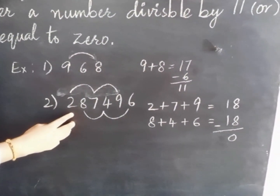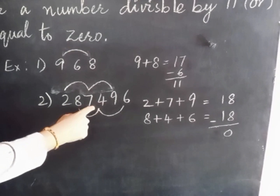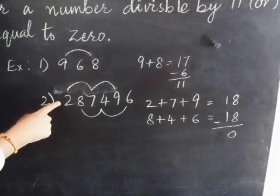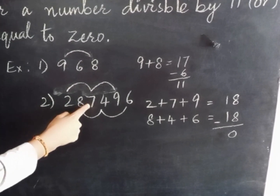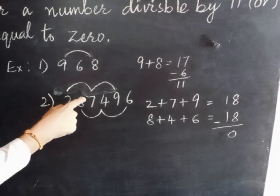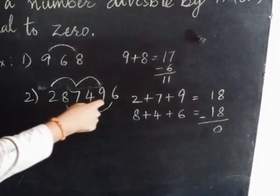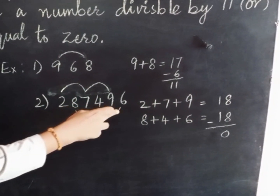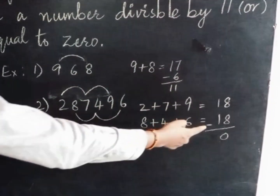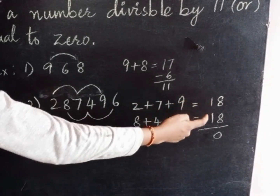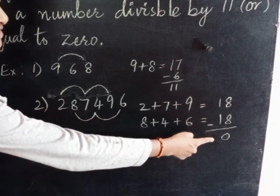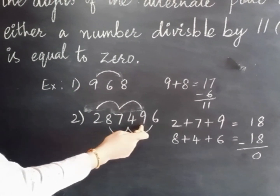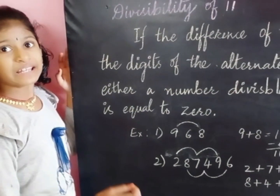Next example: 287496. We take alternate digits: 2 plus 7 plus 9 gives us 18, and 8 plus 4 plus 6 also gives us 18. We subtract: 18 minus 18 equals 0. So 287496 is also divisible by 11.